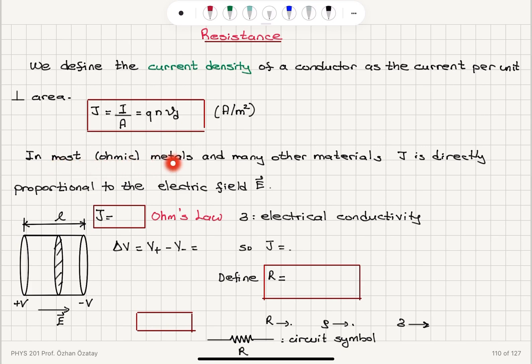In most metals — ohmic metals and many other materials — the current density J is directly proportional to the electric field E. The proportionality constant is sigma, so J = σE. This is known as Ohm's law. Sigma is a material-dependent and temperature-dependent quantity called electrical conductivity.